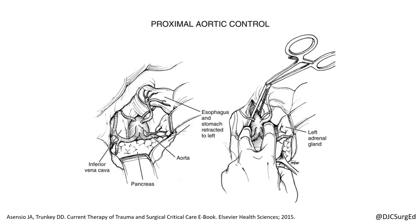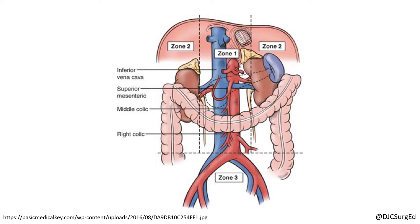The inframesocolic portion of zone one contains the infrarenal aorta, infrahepatic IVC, and distal SMA and SMV. These vascular structures can be accessed with a right-sided medial visceral rotation, or Cattell-Braasch maneuver, in conjunction with a Kocher maneuver.